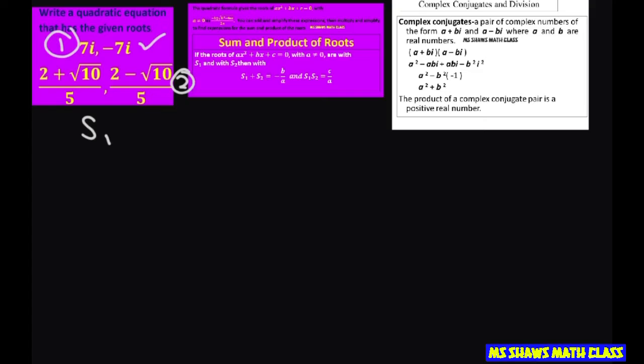We have solution 1 equals 7i and solution 2 equals negative 7i. The first thing we want to do is use our sum and product of roots by adding these up. So we're adding solution 1 plus solution 2. That's going to be 7i minus 7i, which gives us 0. That is supposed to be negative b divided by a.